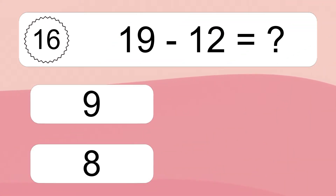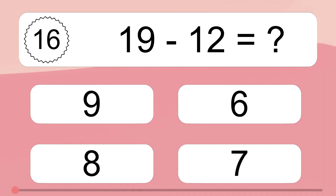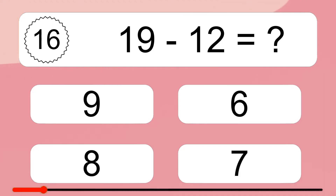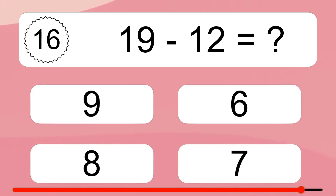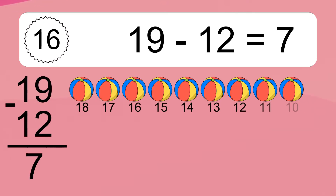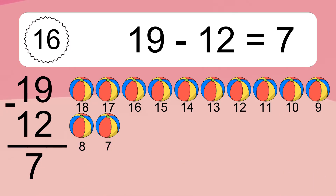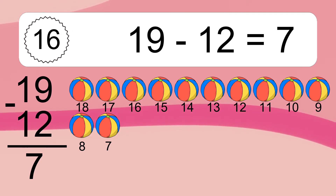19 minus 12 equals what? 19 minus 12 equals 7. Let's count it: 18, 17, 16, 15, 14, 13, 12, 11, 10, 9, 8, 7.